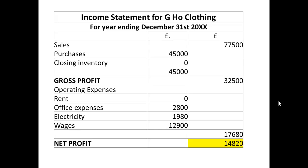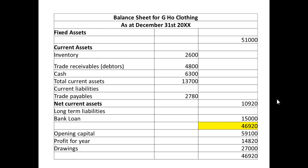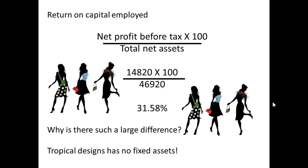The income statement for Jiho Clothing shows a net profit of £14,820, which we've highlighted. And on the balance sheet, because the premises are owned, the premises are worth £51,000 or have a net value of £51,000, and that makes the net assets £46,920. So the return on capital employed here — net profit before tax times 100, divided by total net assets — works out at 31.58%.